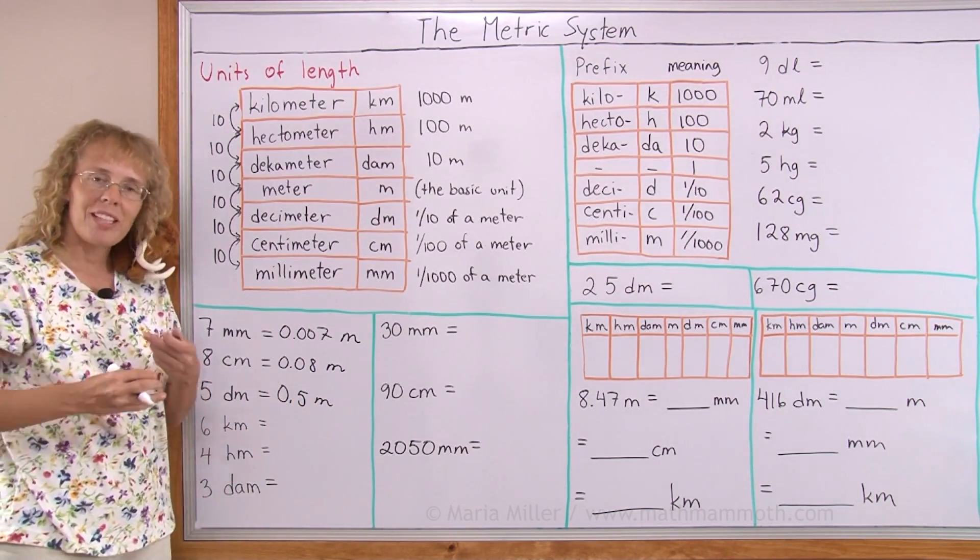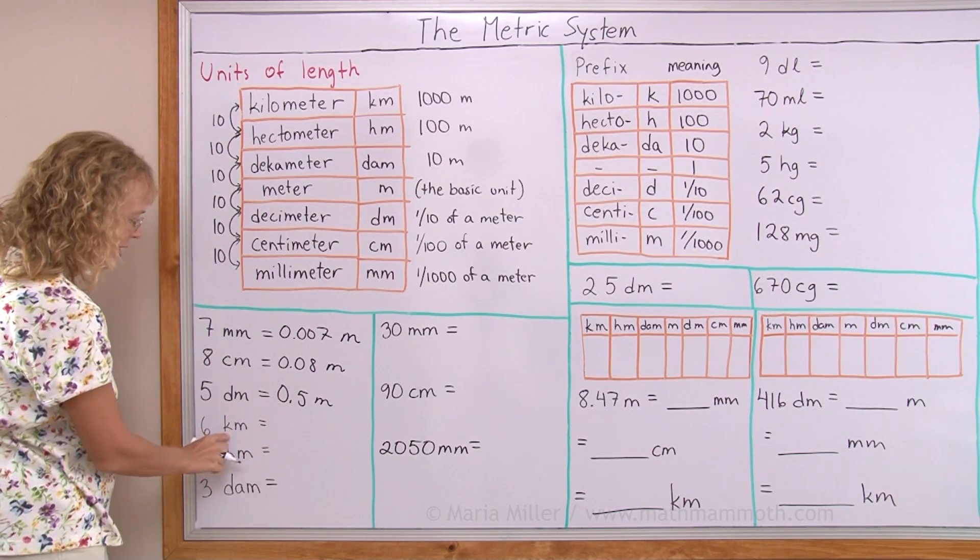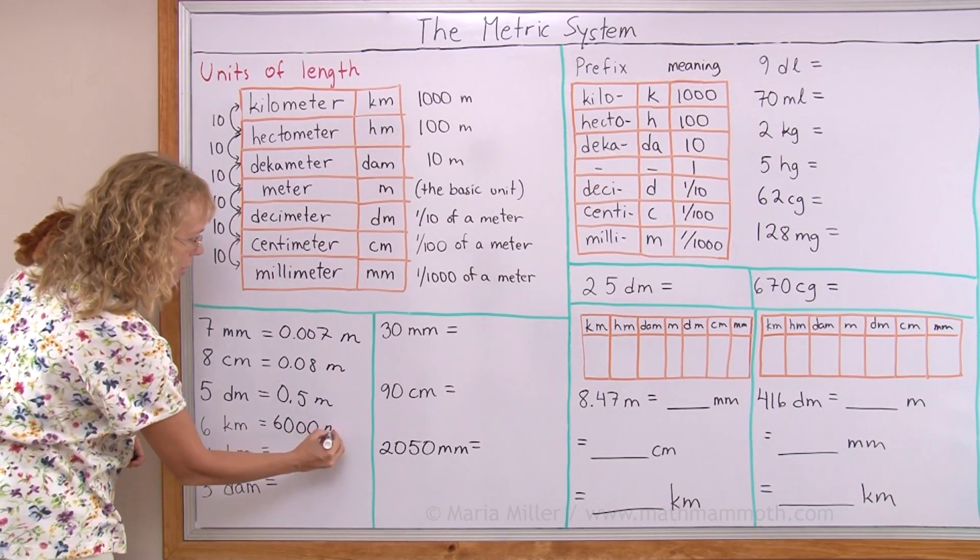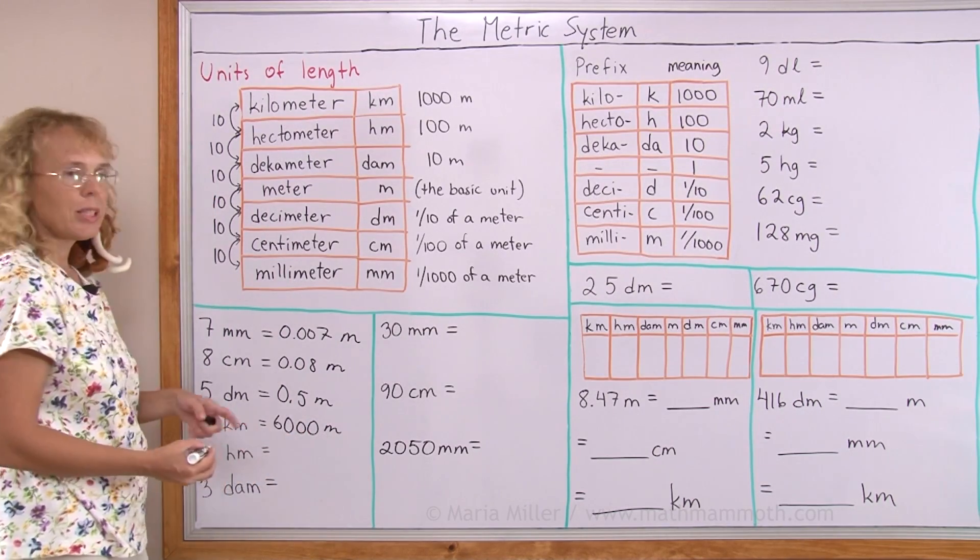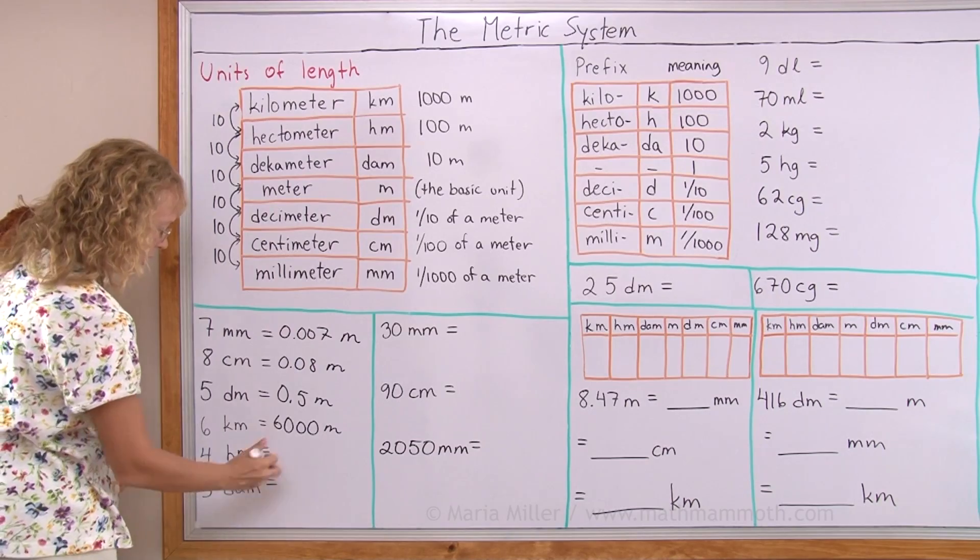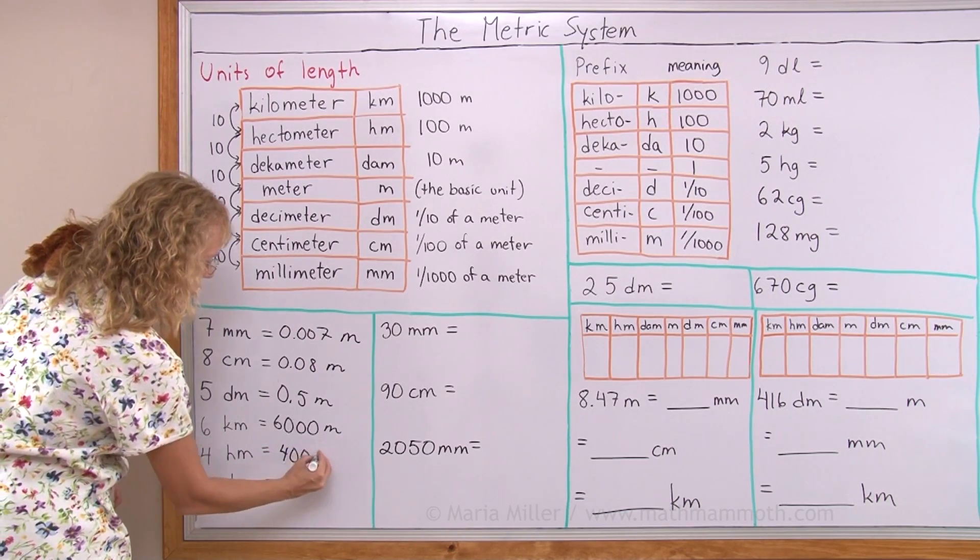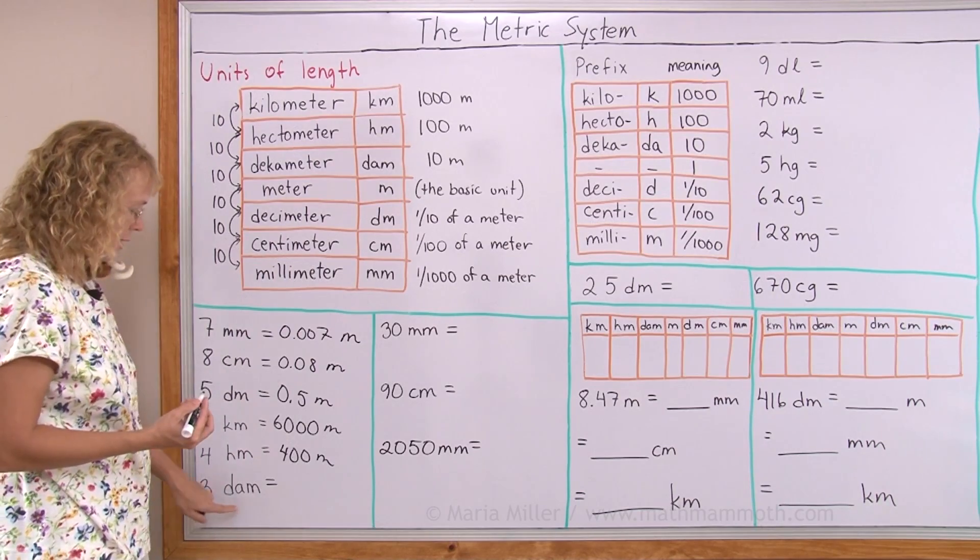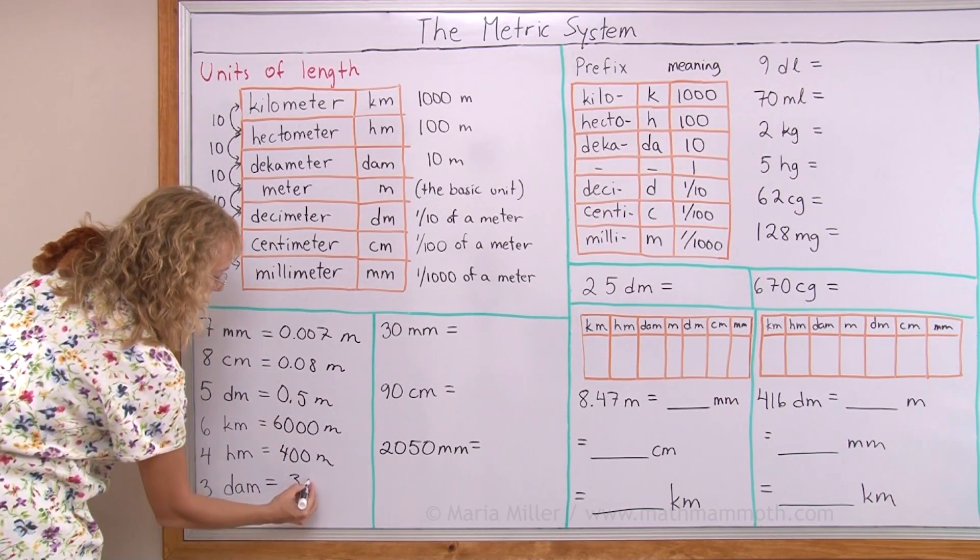Six kilometers, kilo meaning thousand, so here we have six thousand, so I just write it out as a number: 6000 meters. Four hectometers, hecto meaning hundred, so I have four-hundred meters. And then deca here, meaning ten, so three deca is thirty meters.